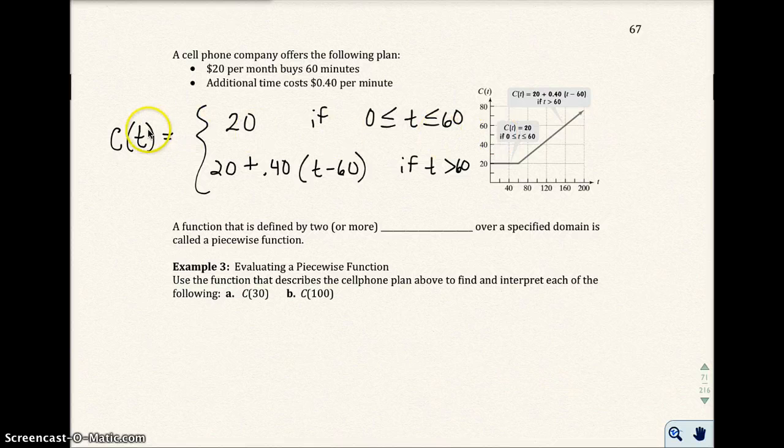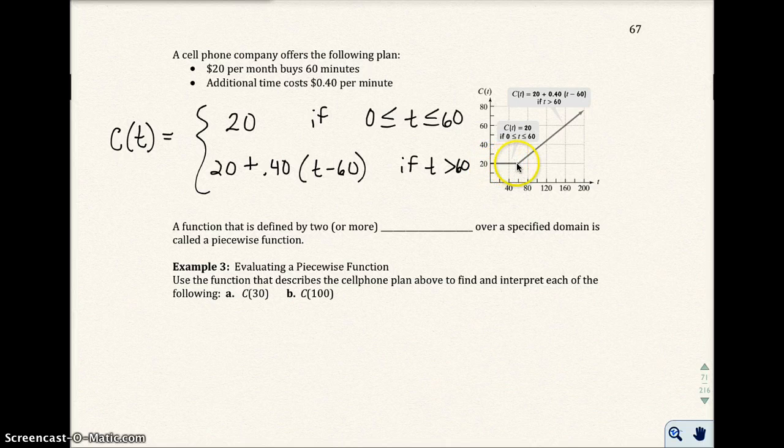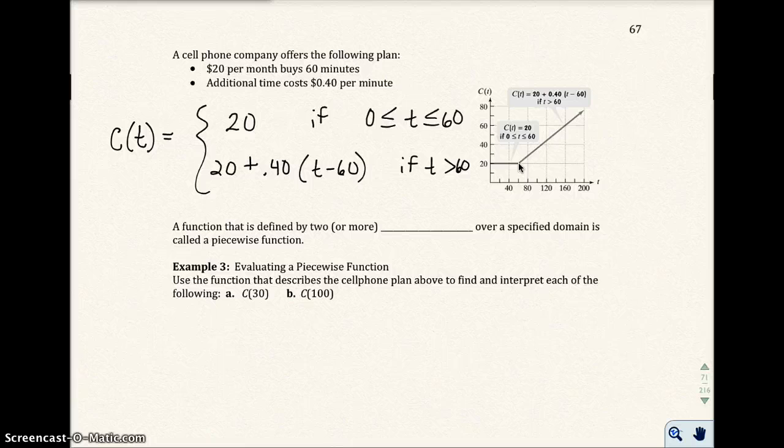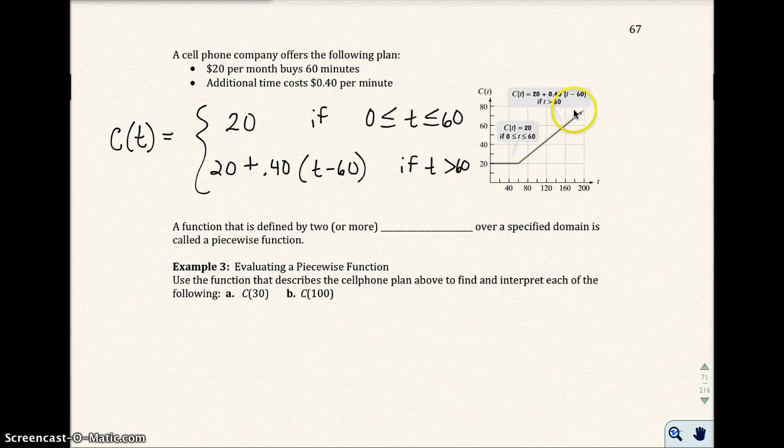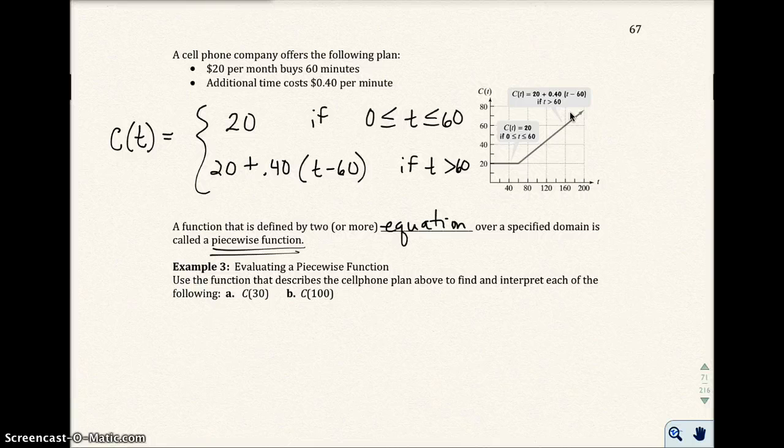So what we have here is your cost is going to be constant. Constant means it's not going to change—it's constantly $20 as long as you're between 0 to 60 minutes. Once you hit more than 60 minutes, that's when your cost goes up. A function defined by two or more equations over a specified domain is called a piecewise function. This is definitely going to be on your final exam.